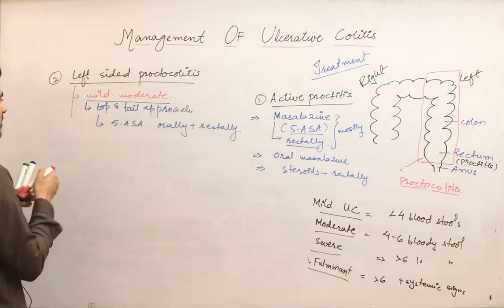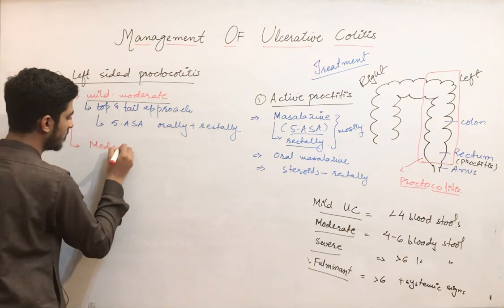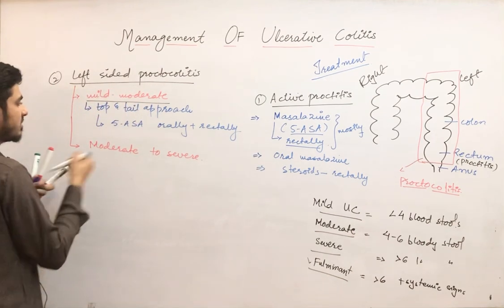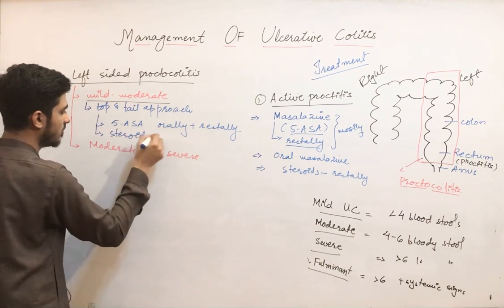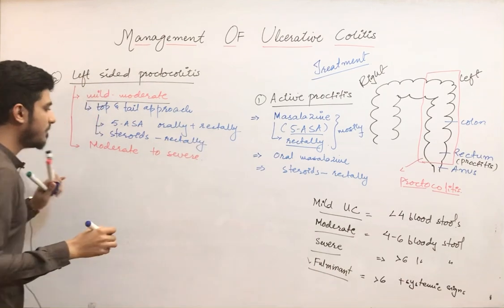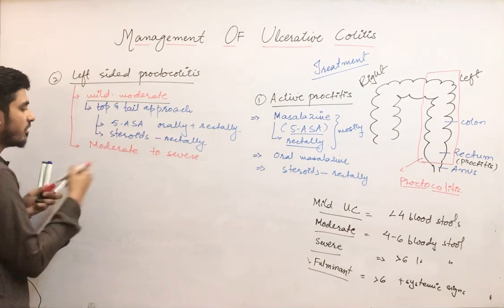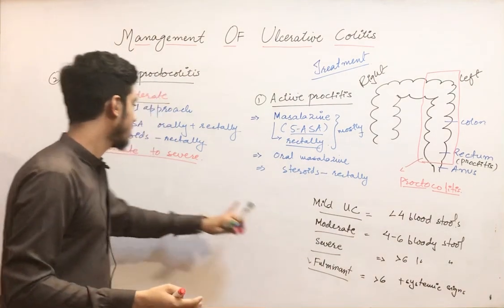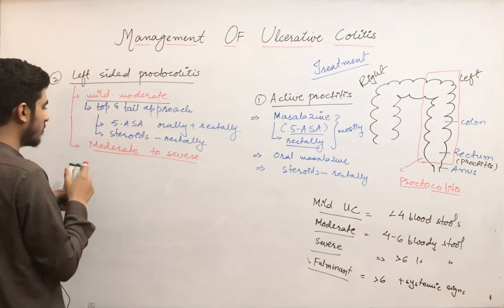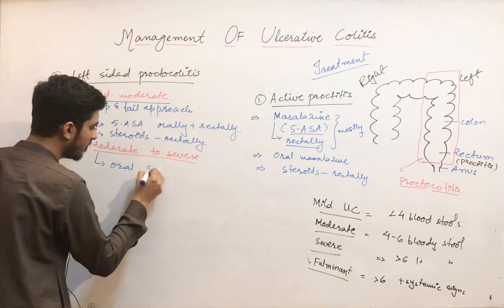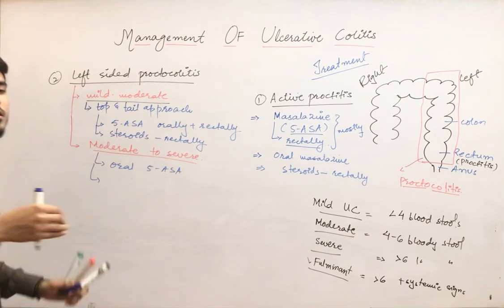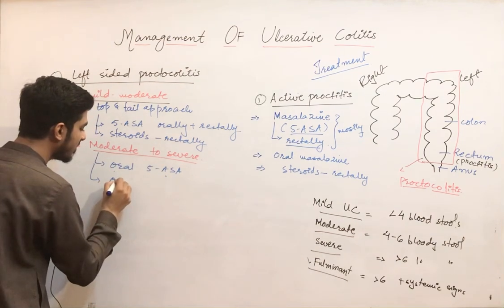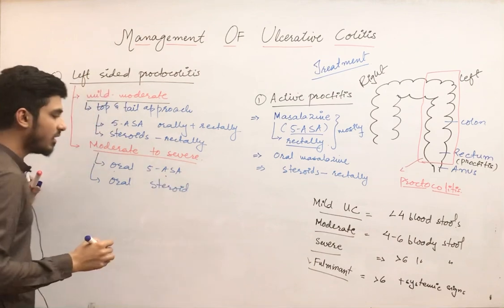You can also give steroids rectally in that case. For moderate-to-severe cases — the patient passing six or more bloody stools per day — you give oral 5-aminosalicylic acid and oral steroids. As the case becomes more severe, you shift the drugs to the oral route.